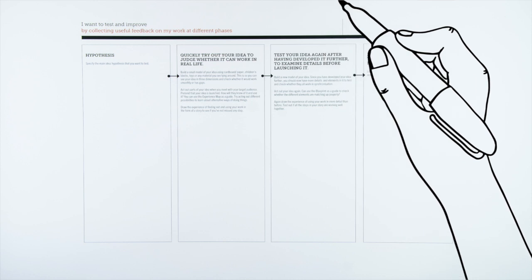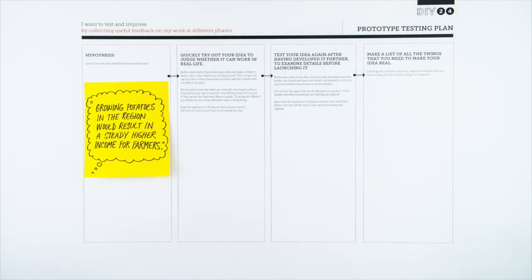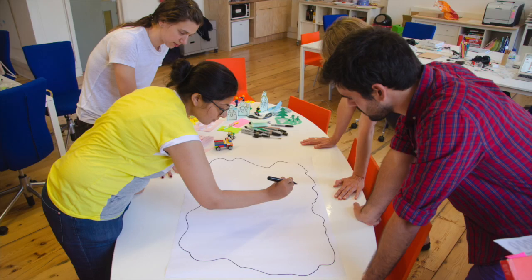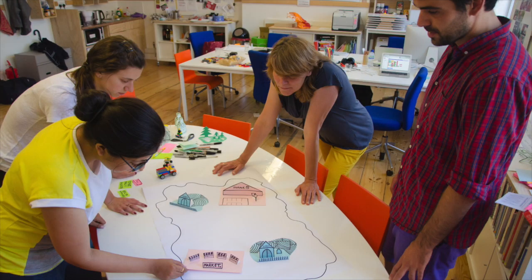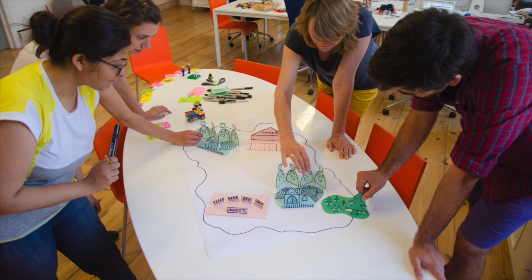She uses the prototype testing plan. They generate a hypothesis. They try out the idea to assess whether it can work in real life. Helen and her team create a map of the region with potato farms, storage facilities, markets and communities of farmers. They think through all the different ways that the system could work.